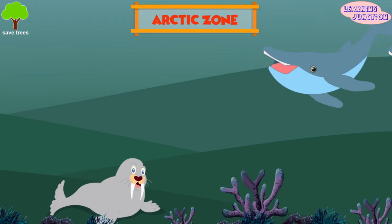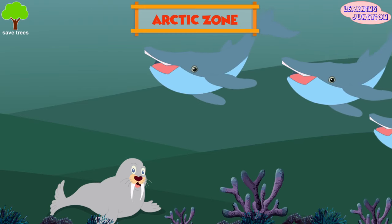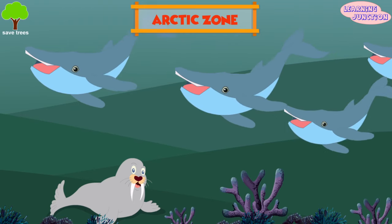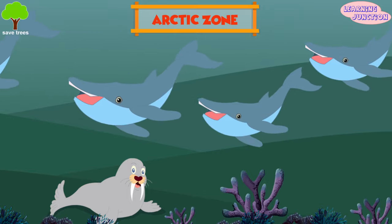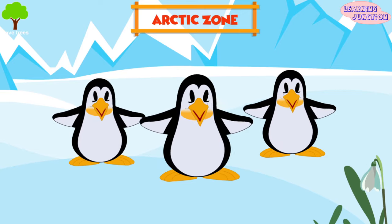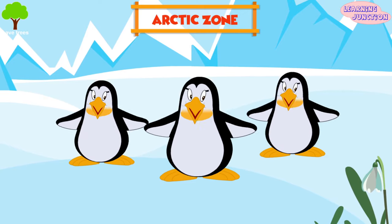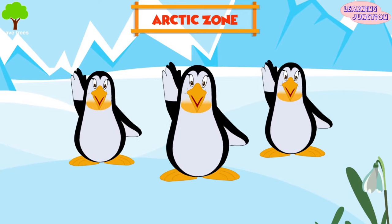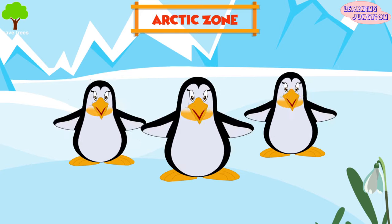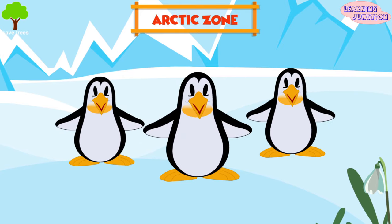Humpback whales and walruses live in the Arctic Ocean. Different types of penguins, including the emperor penguin, live in Antarctica.